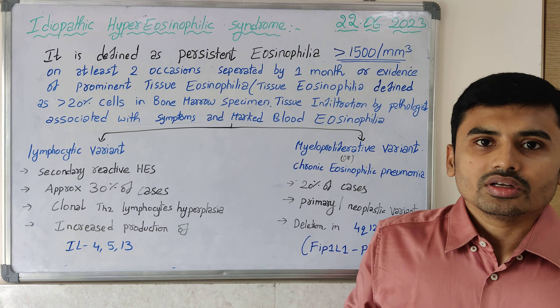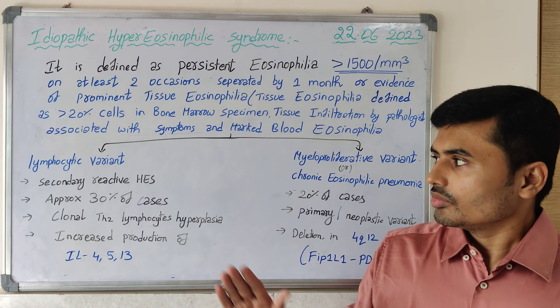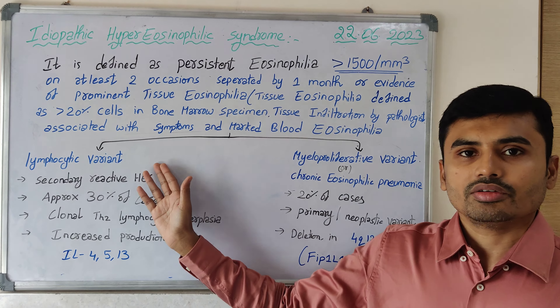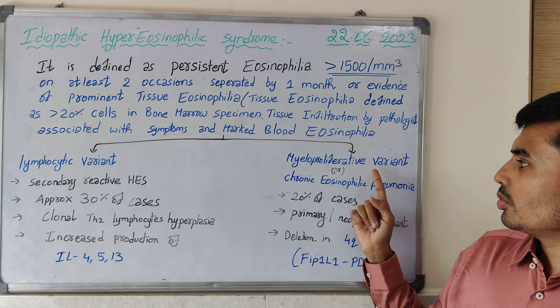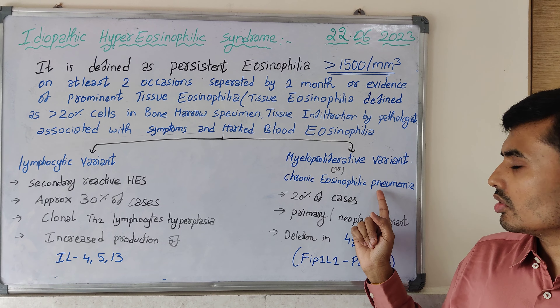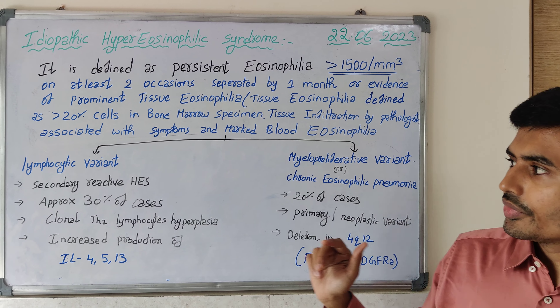There are 2 variants of idiopathic hypereosinophilic syndrome: one is the lymphocytic variant, and the other is the myeloproliferative or chronic eosinophilic variant.